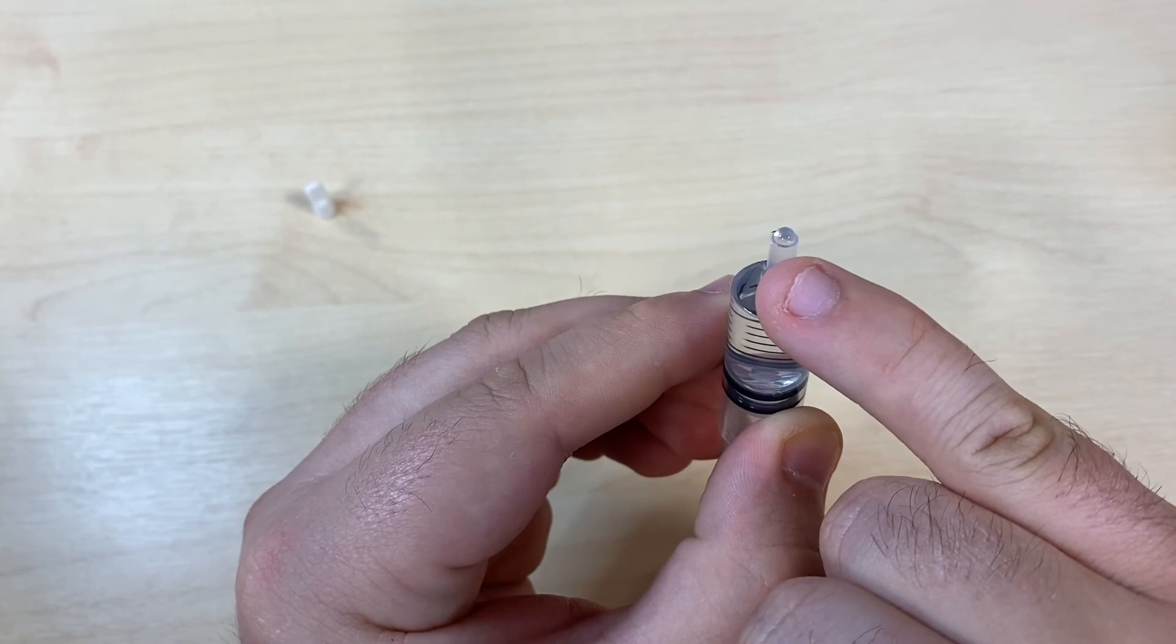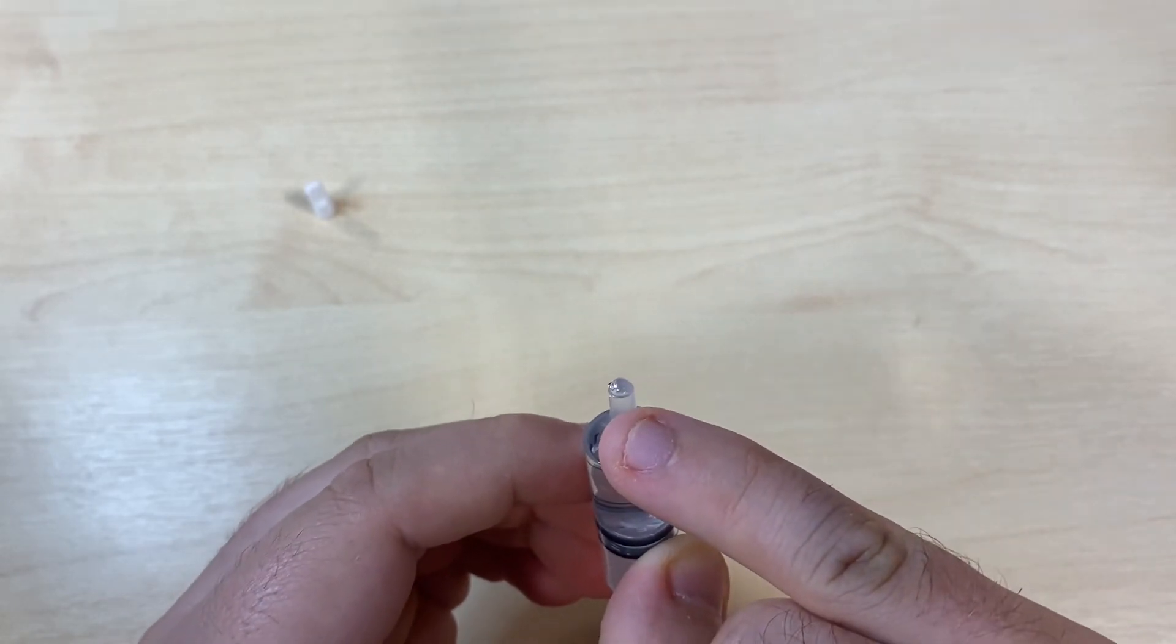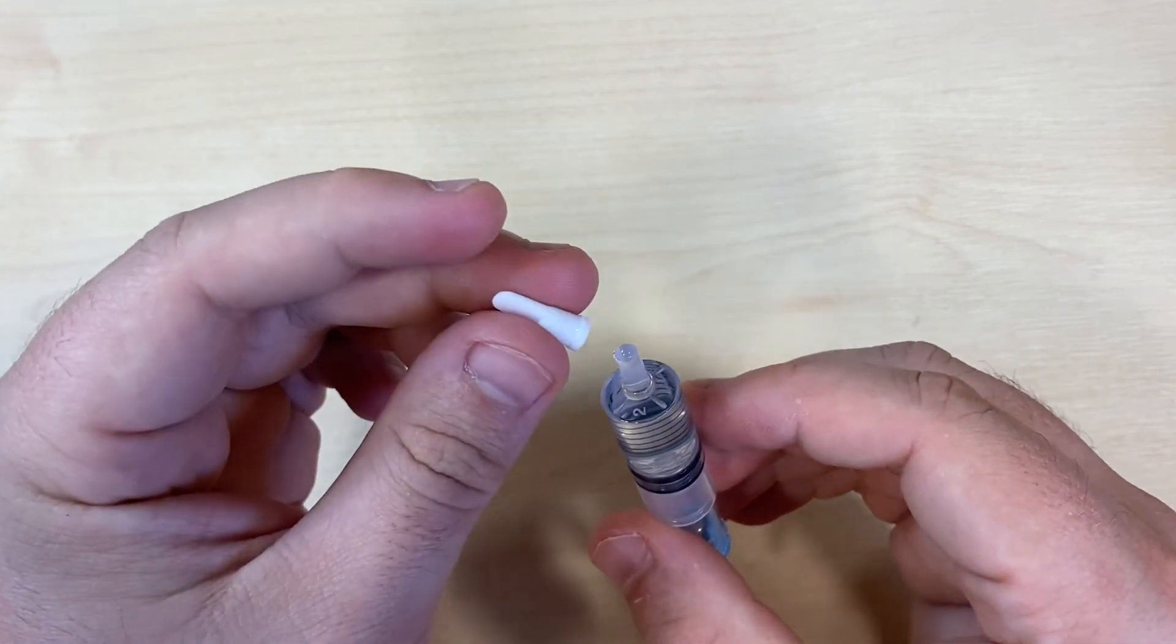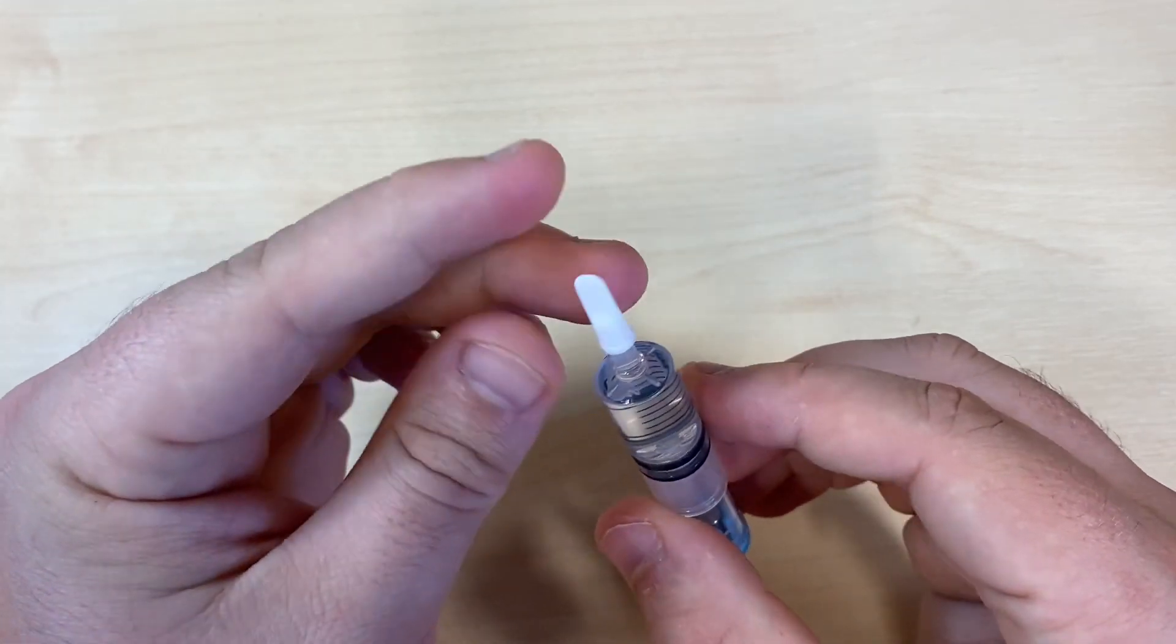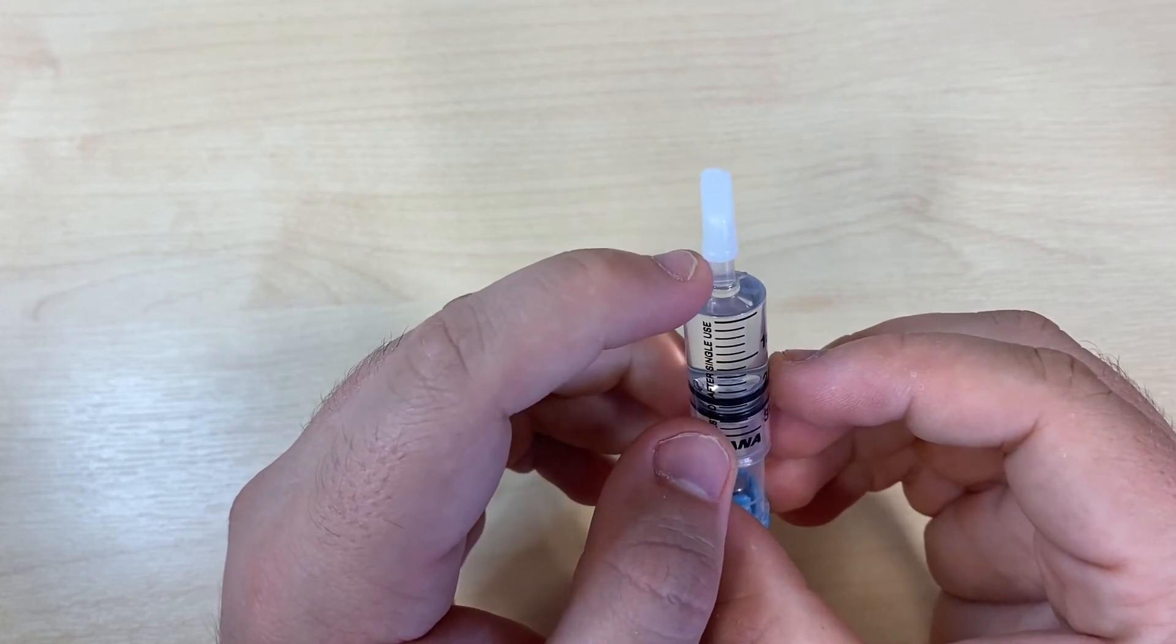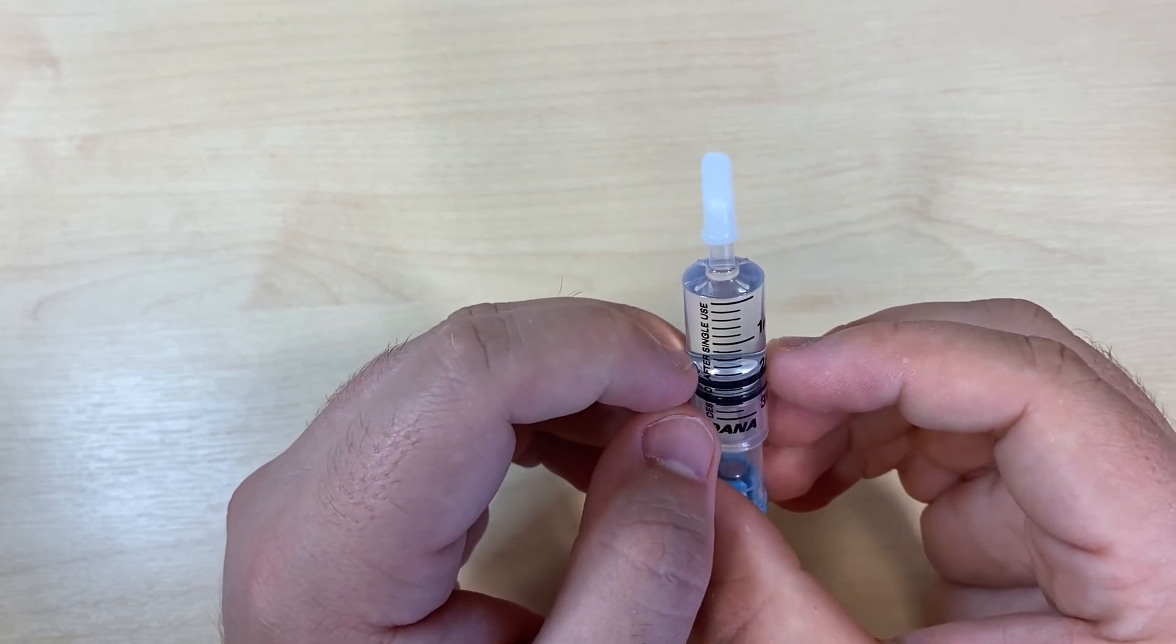You should be able to see a nice dome of insulin at the top of the neck. Retrieve your white cartridge cover from earlier and very gently place it on top, just enough so that it grips. If you push this on with too much force, you'll push air into the neck and need to get rid of that before you go through to the prime.